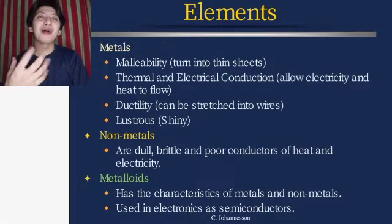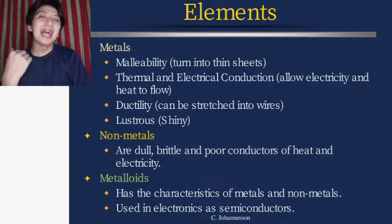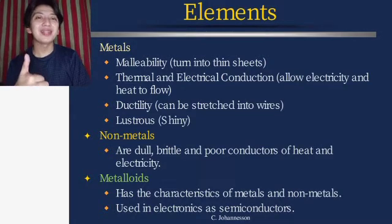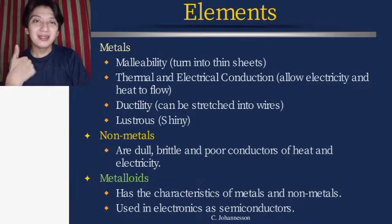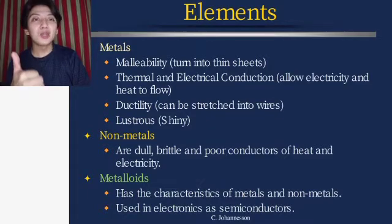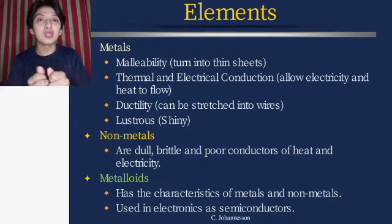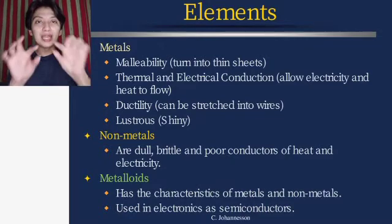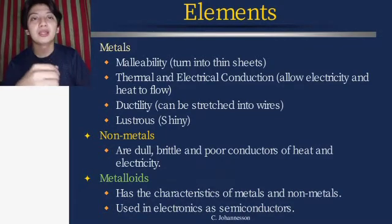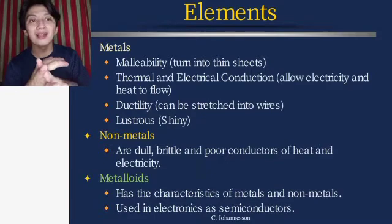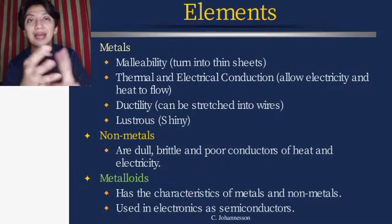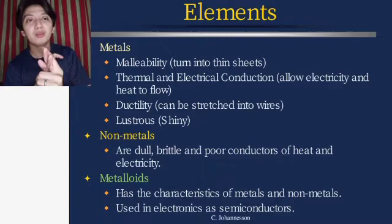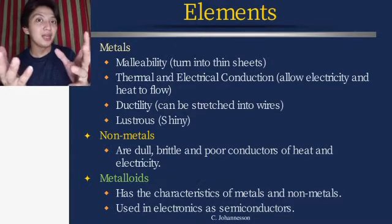Metals have the characteristic of malleability — they can be turned into thin sheets, like your roof. They also have thermal and electrical conduction, allowing electricity and heat to flow. Ductility means they can be stretched into thin wires. Metals also have luster, meaning they are shiny.